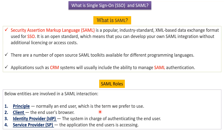Now we will see SAML roles. There are four entities involved in SAML interaction. The first one is the principal, which is nothing but the end user. The second one is the client, which is nothing but the end user's browser.